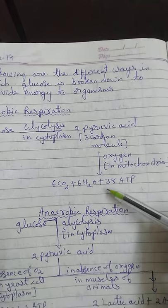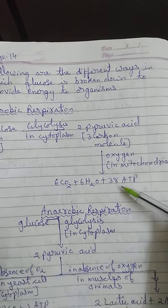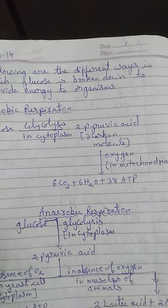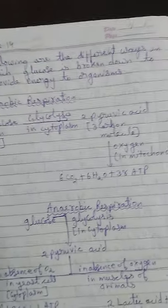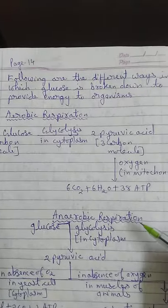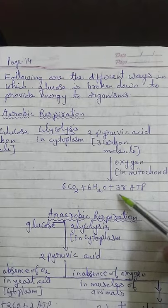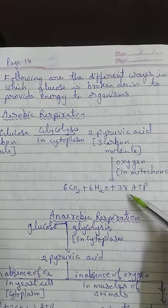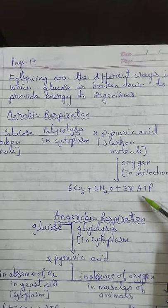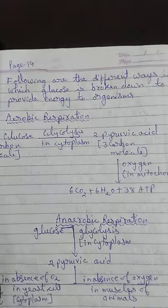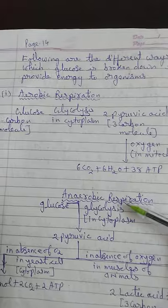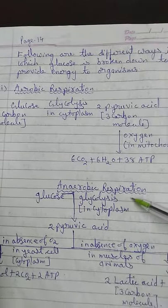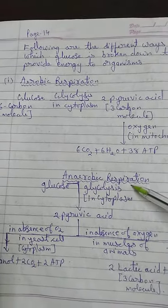Energy is released and stored in 38 ATP molecules. That means when one molecule of glucose is broken down, the energy released can be stored in 38 ATP molecules — a large amount of energy. Aerobic respiration takes place in the higher category of animals.